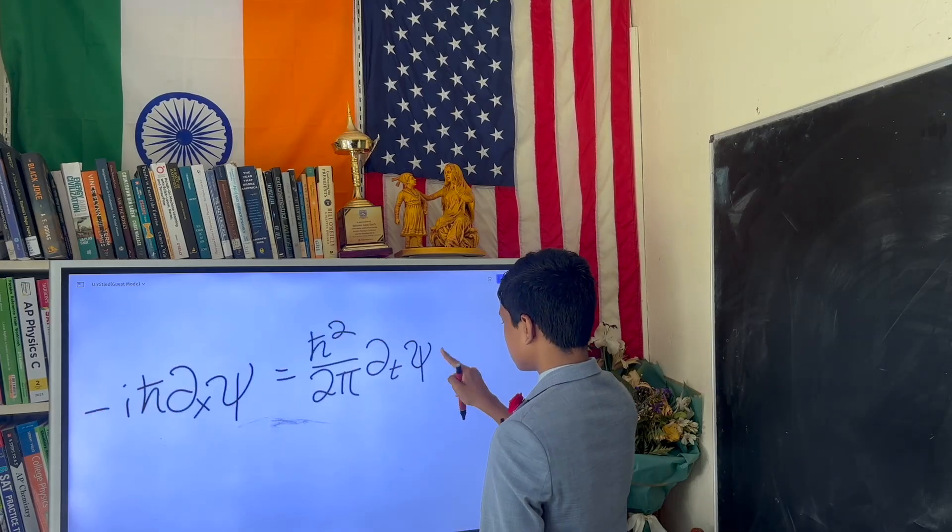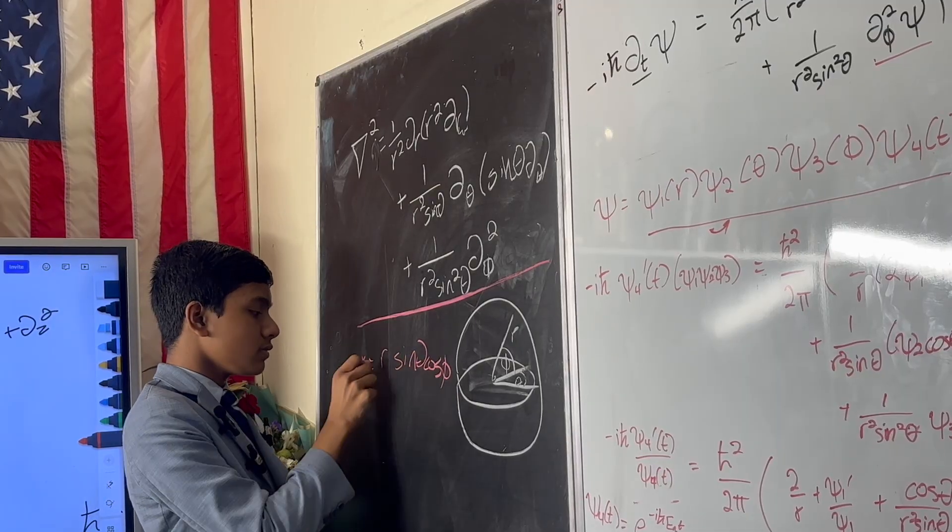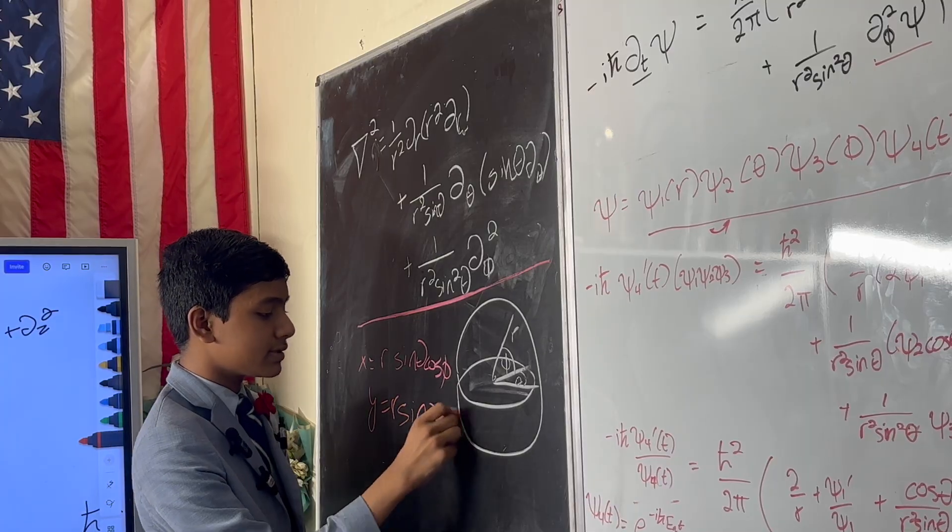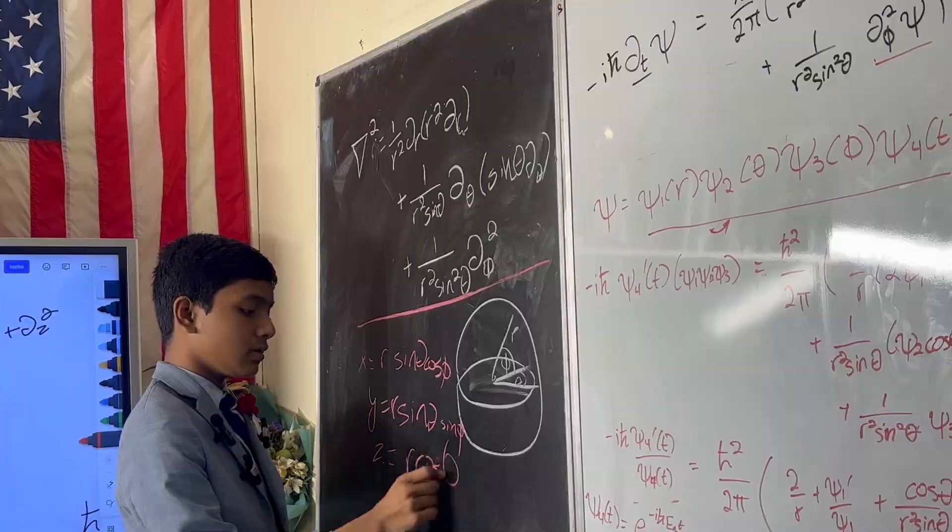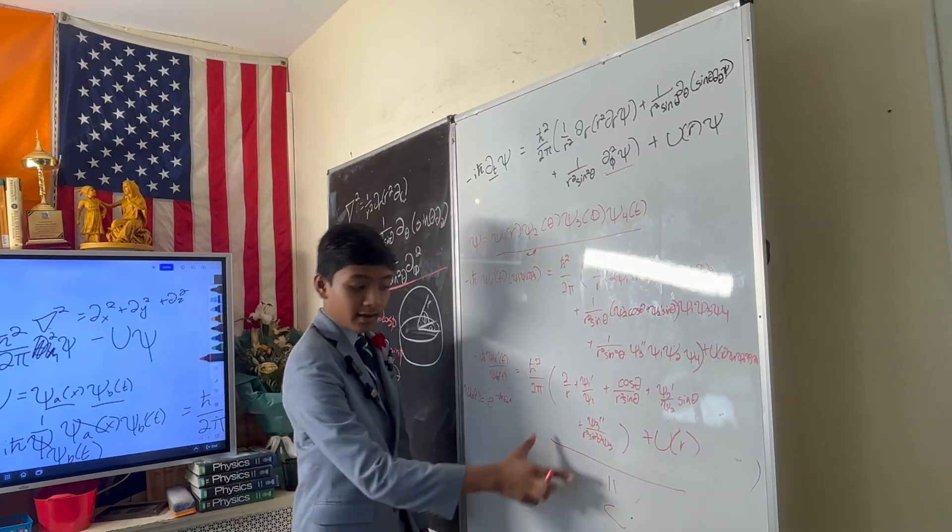First started with the Schrodinger equation in 1D. The Cartesian Laplacian with the spherical Laplacian, which is much, much worse than human eyes could have ever imagined. This side is time-dependent, this side is space-dependent.